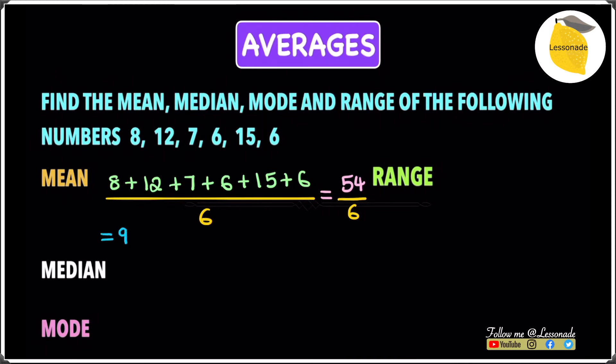So now we had a look at the mean. Now let's have a look at the median. For the median, we need to first arrange the list of numbers we have from the lowest to the highest. So the lowest numbers we have in this list is 6. So let's arrange them starting with the 6. The next lowest number is 7, then 8.